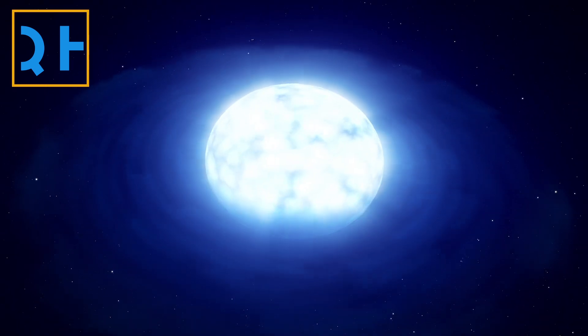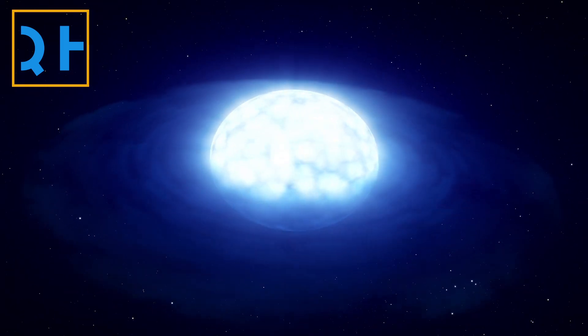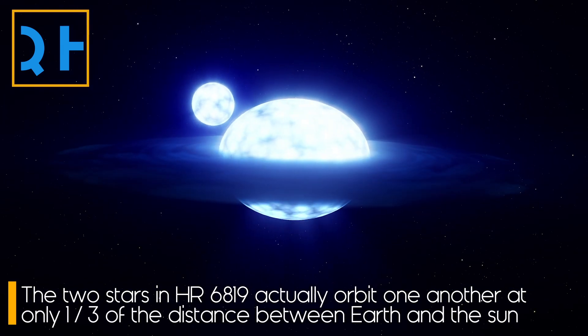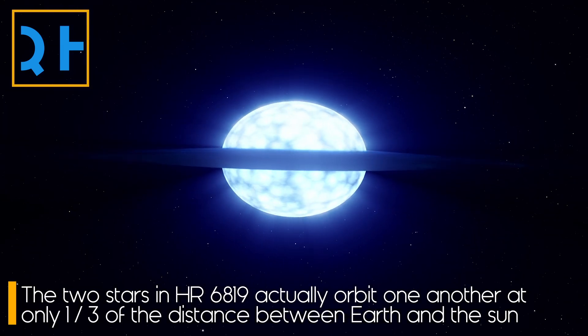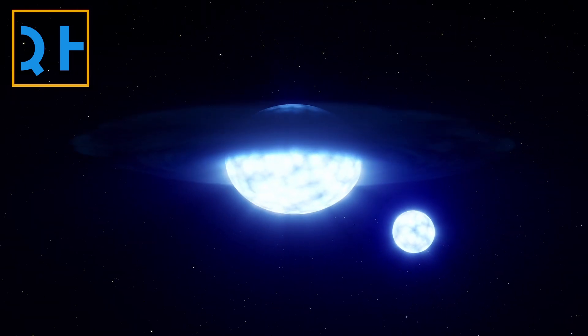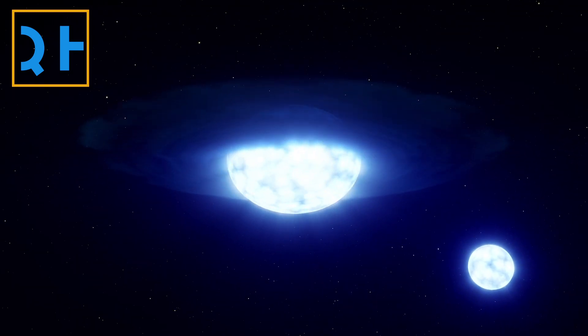The scientists found that the system's two stars weren't far apart from each other after all, but actually orbited one another at about one-third of the distance between Earth and the Sun. It only appeared that they were spread apart because one star was significantly smaller than the other and rotated much more slowly.